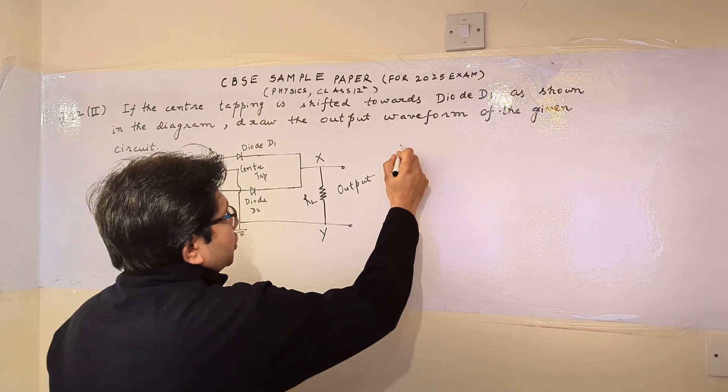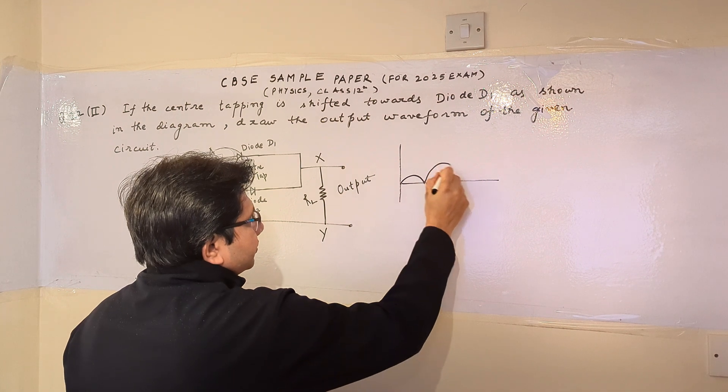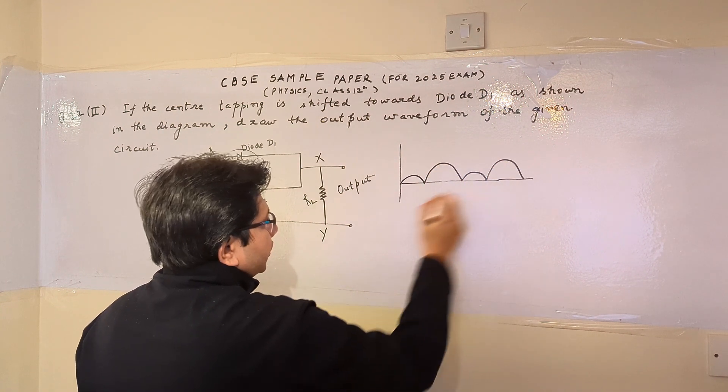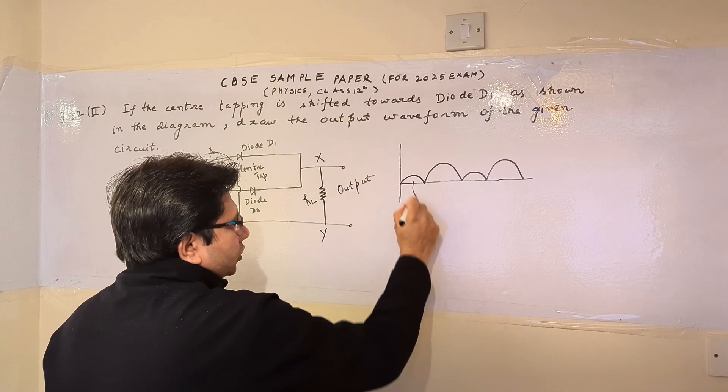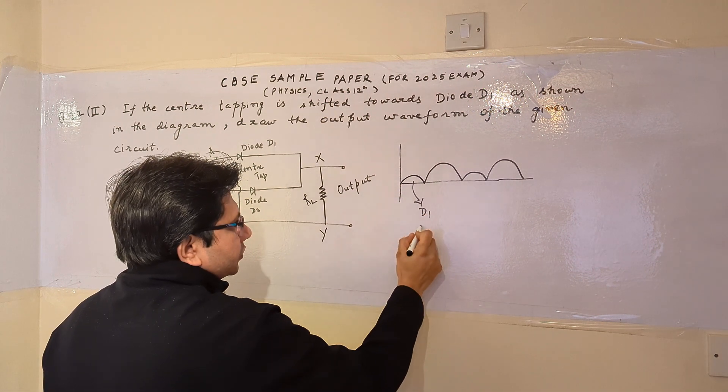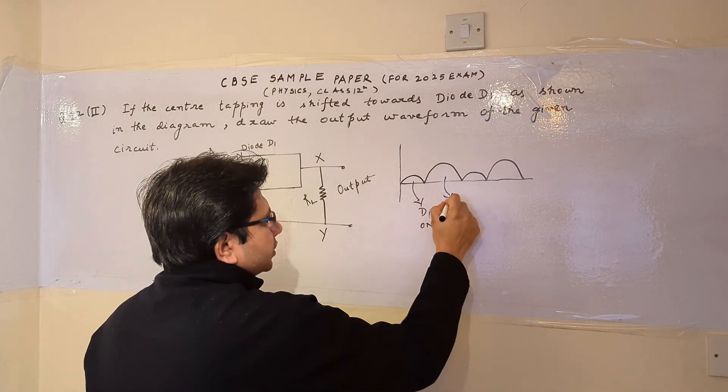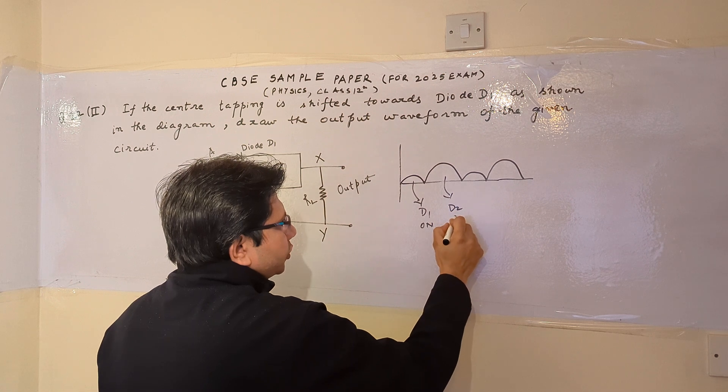Now corresponding to this particular situation, the waveform looks something like this. So this is the output when diode D1 is on. This is the section of the waveform when diode D2 is on.